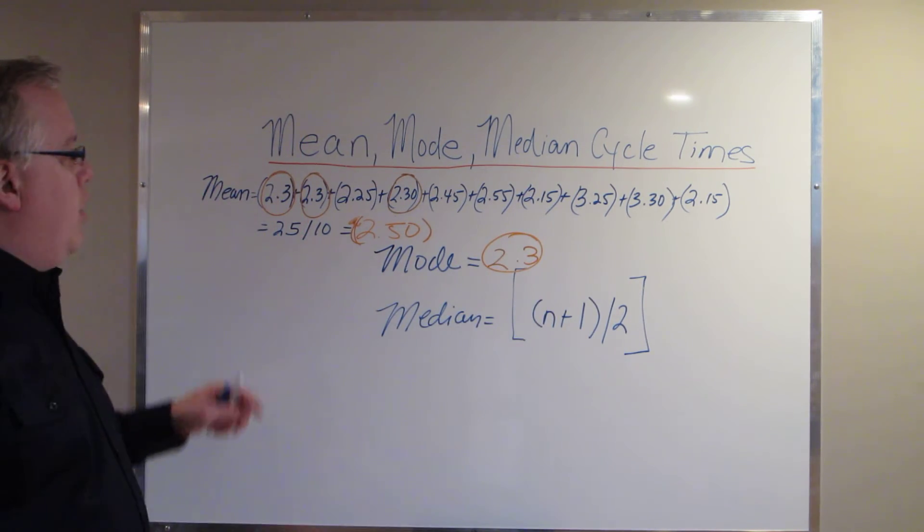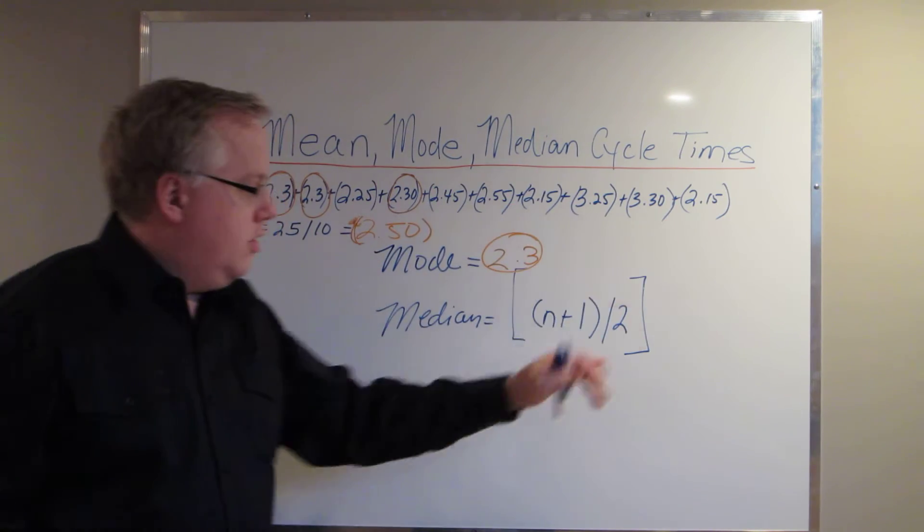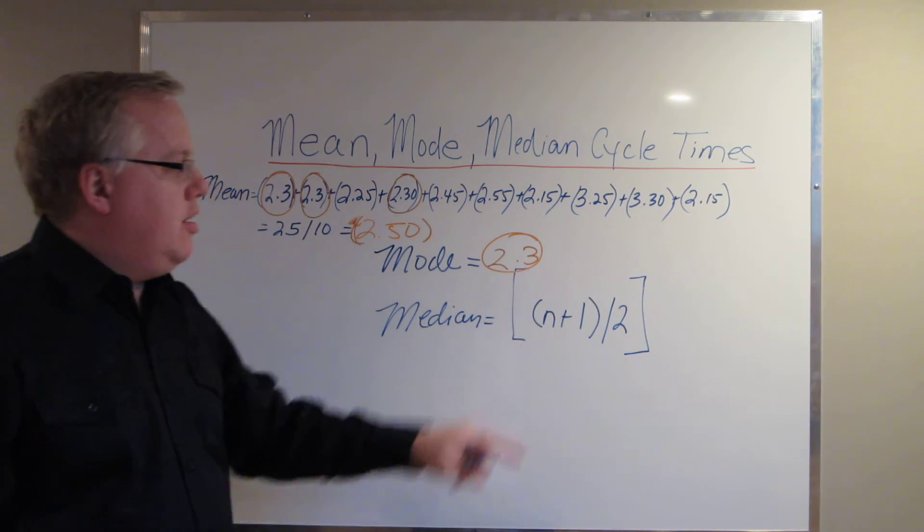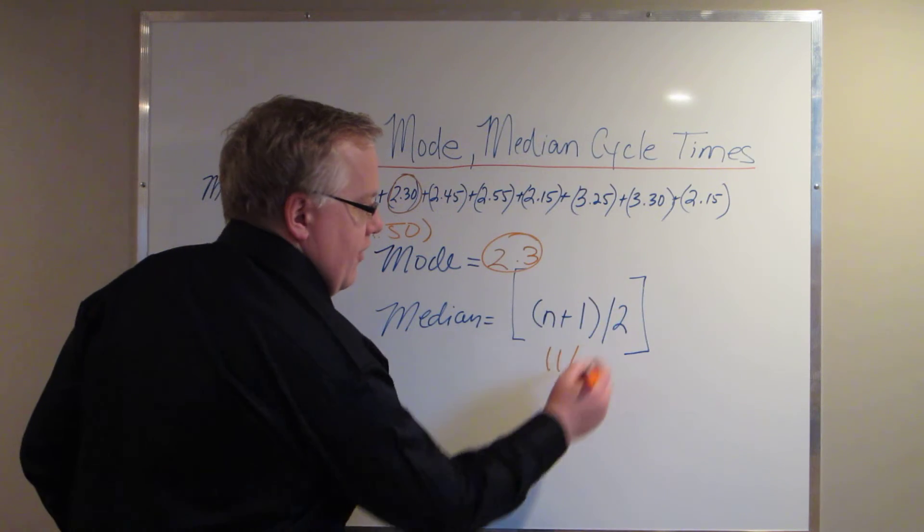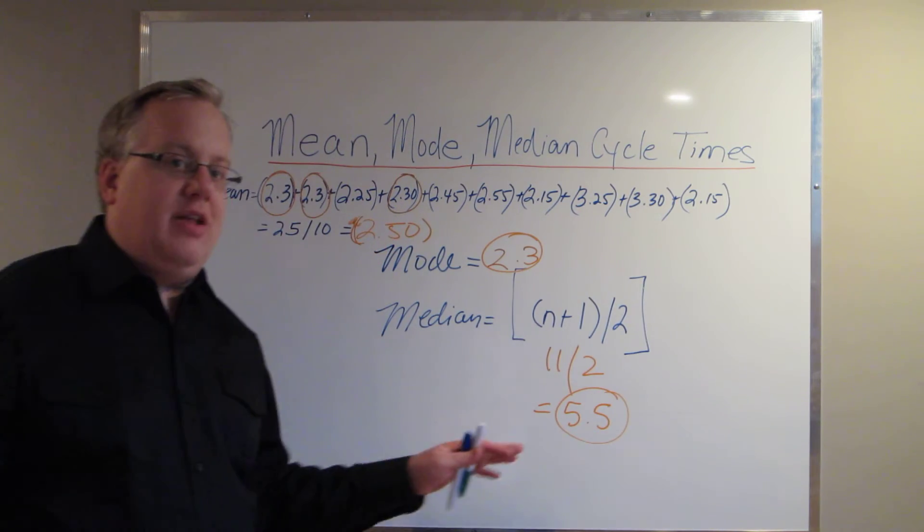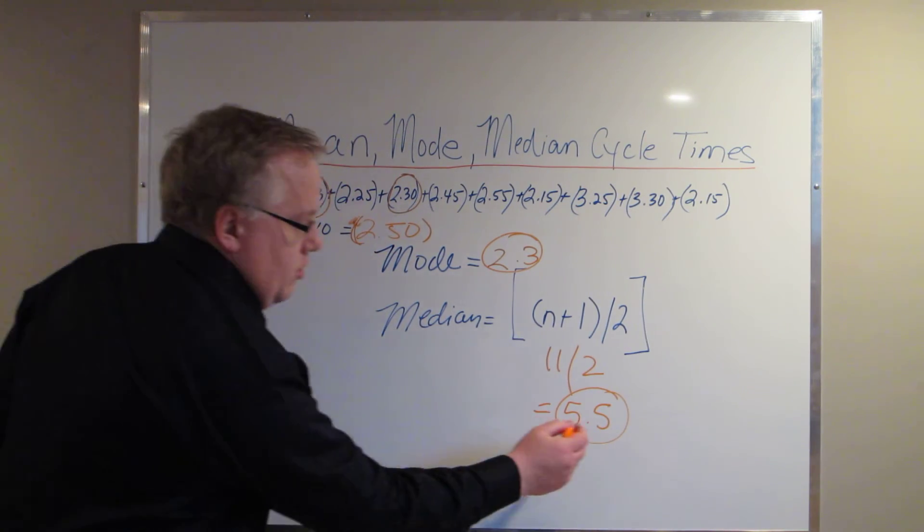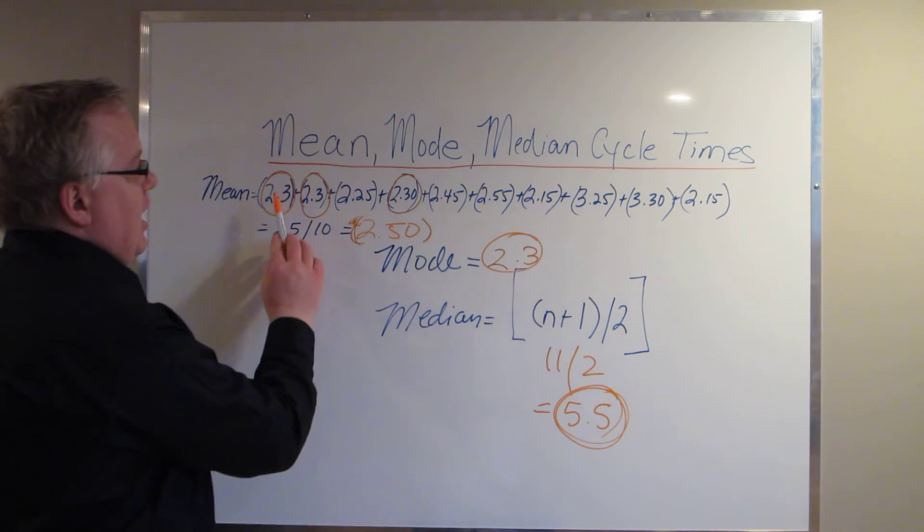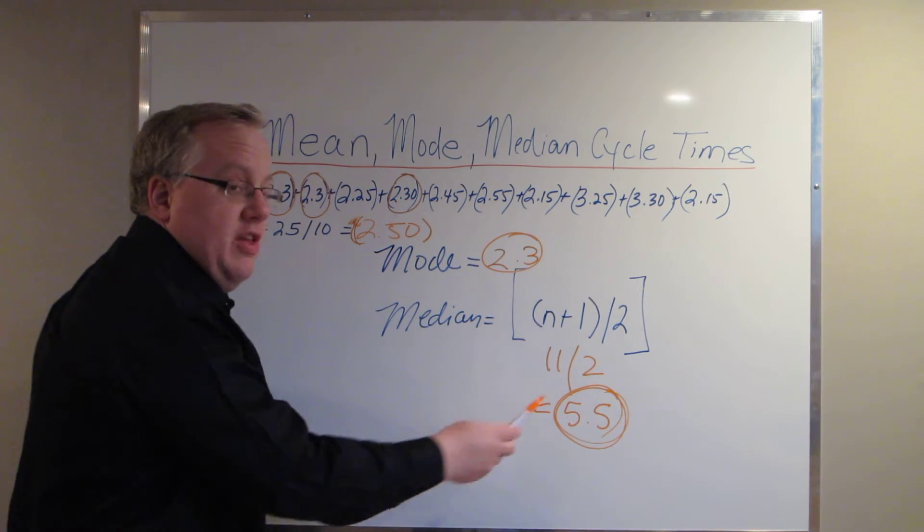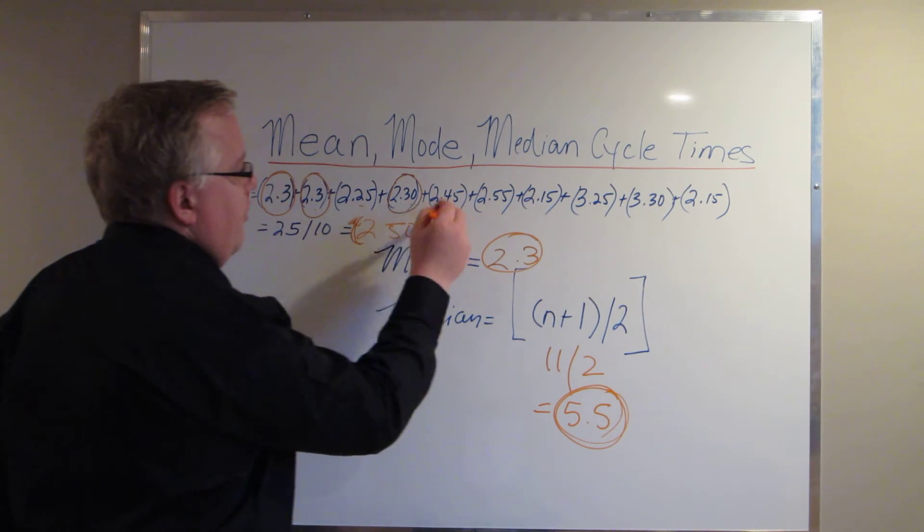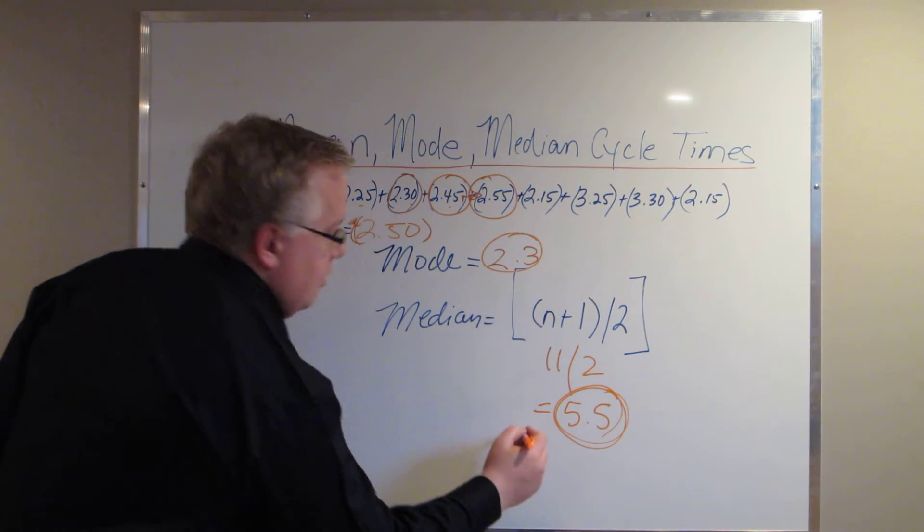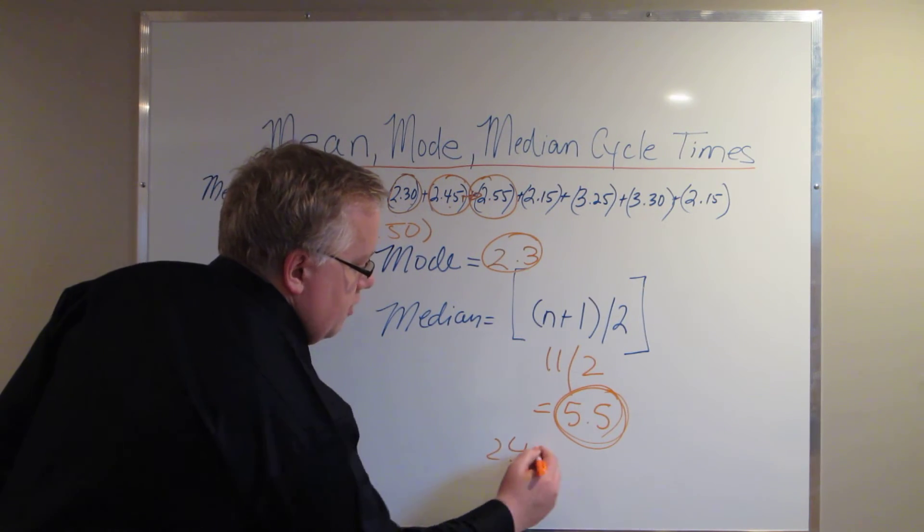The median is where you take all of the sample portions, which is n. In this case, we did 10. So it is 10 plus 1, which would be 11 divided by 2, which means it's 5.5. Now this is not the answer. It's not 5 minutes and 50 seconds. What it says is that you take this 5.5 number and you track it down inside of your sample portion in order to find the cycle time that correlates to the one that's between the 5th and the 6th place. So if you go 1, 2, 3, 4, 5, it's in between 2.45 and 2.55. So we'll say the median time is 2.47.